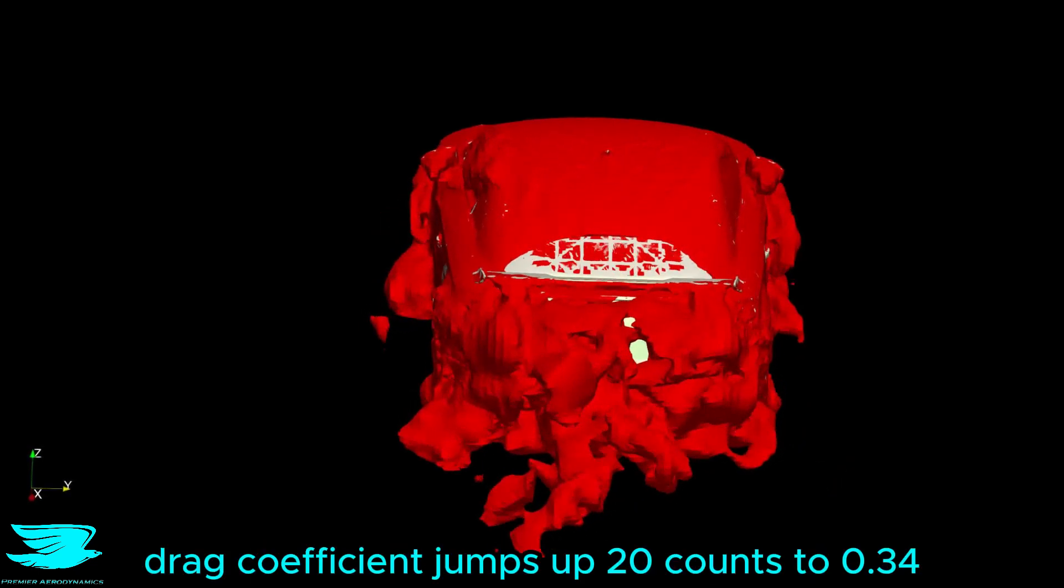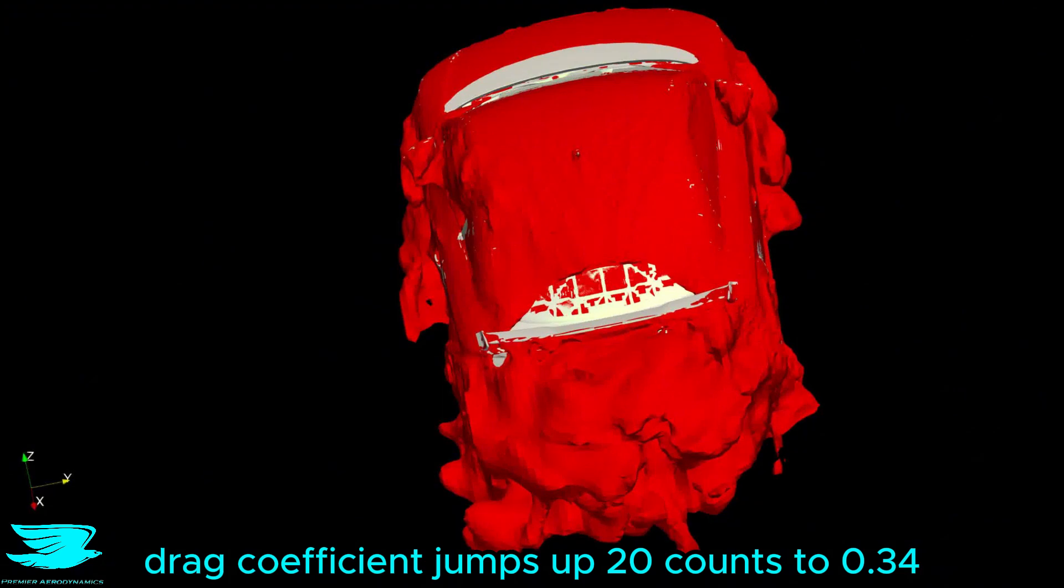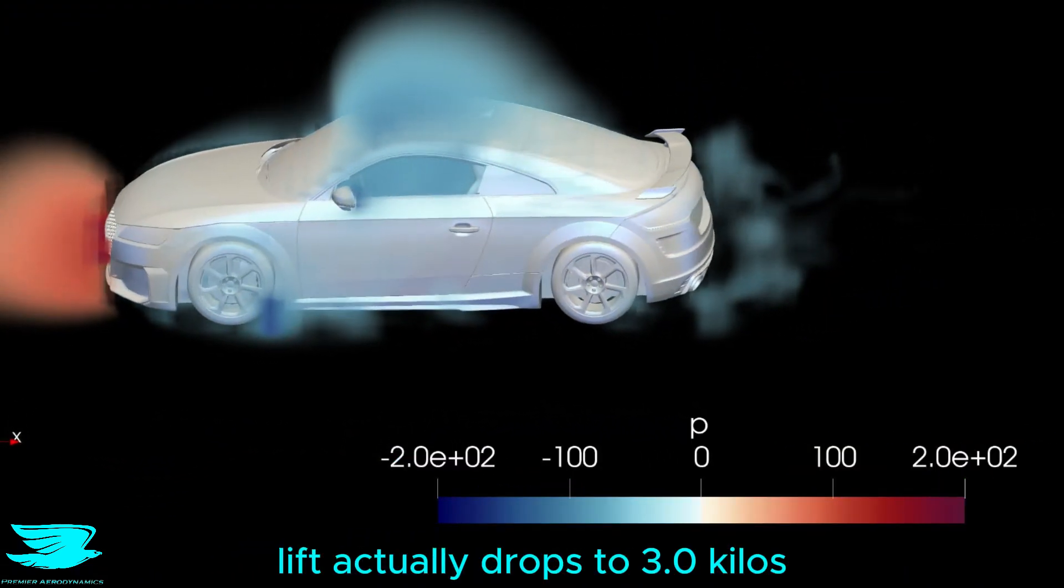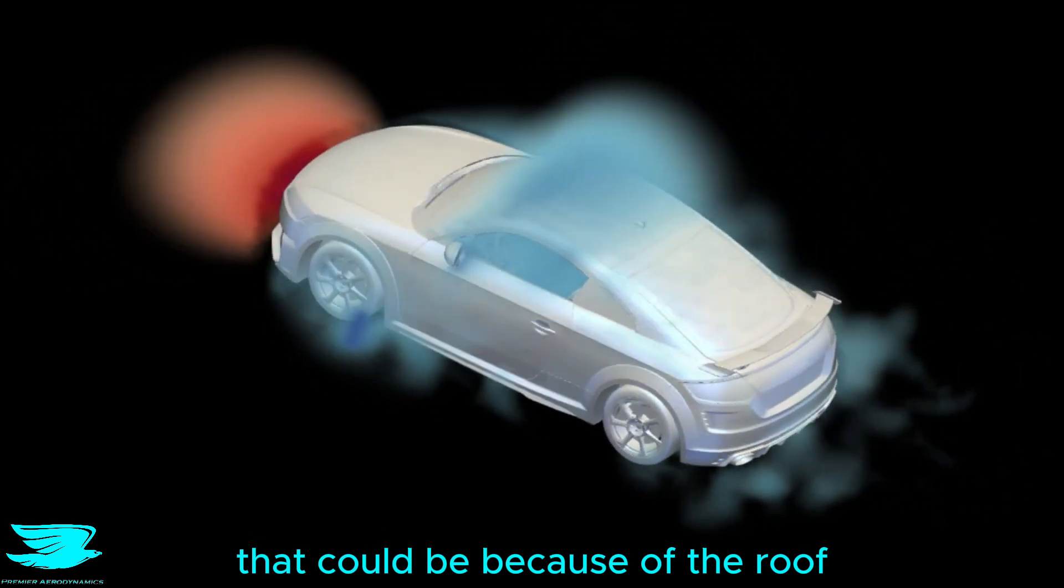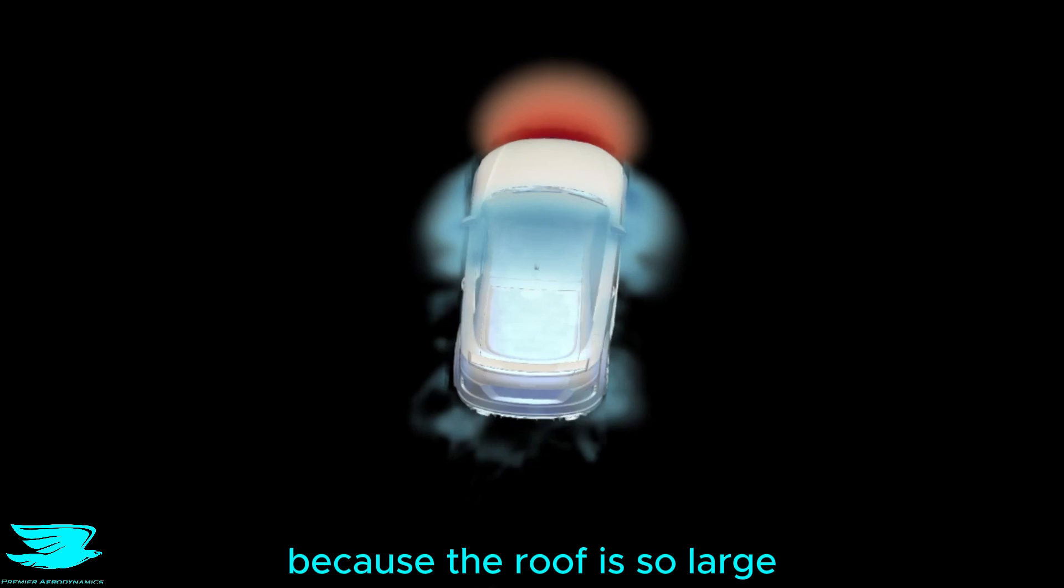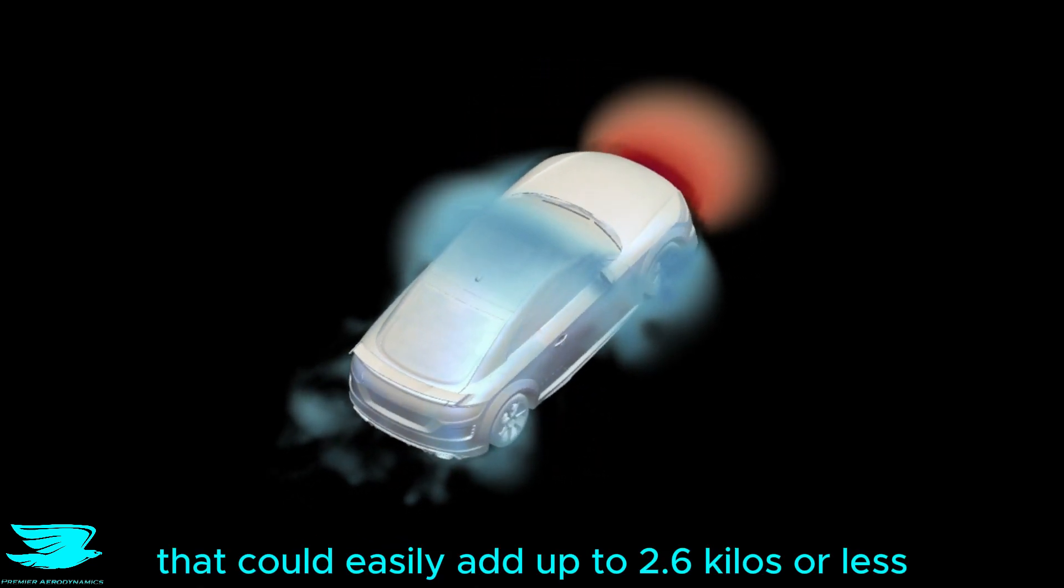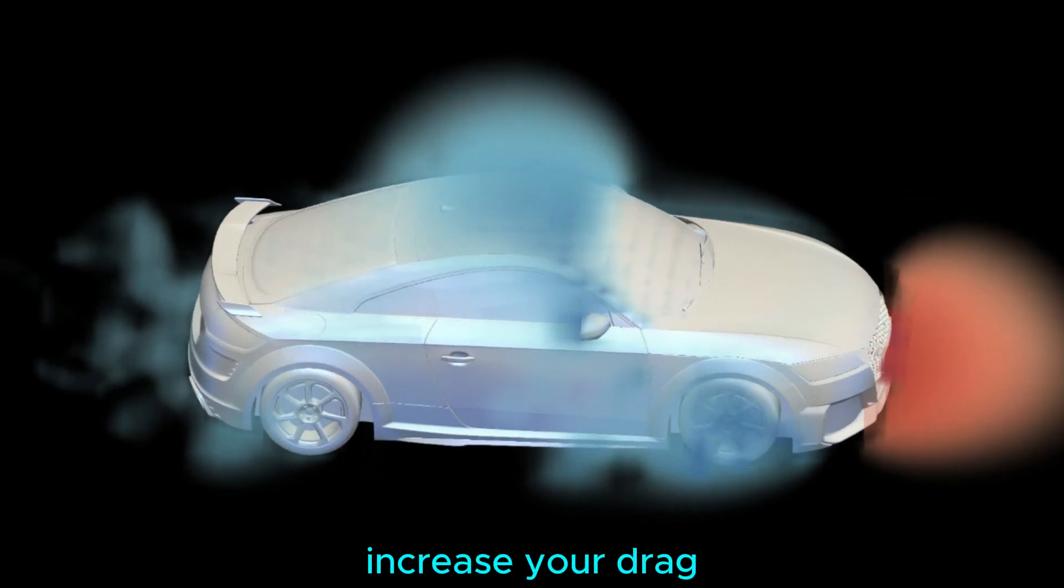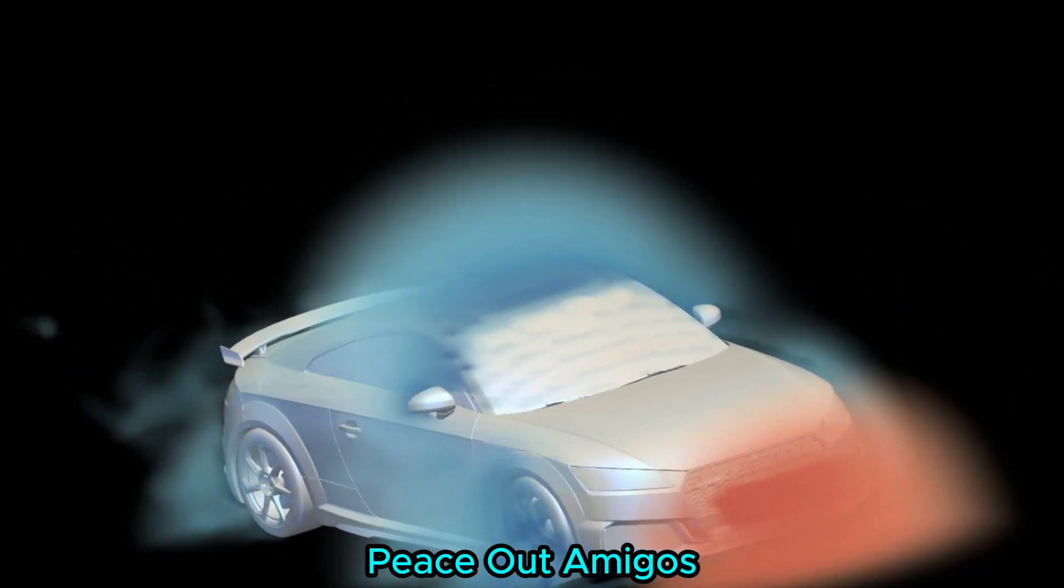With the driver's side window gone, the drag coefficient jumps up 20 counts to 0.34, and interestingly, lift actually drops to 3.0 kilos. That could be because of the roof, because even though there was such a minor change, because the roof is so large, that could easily add up to 2.6 kilos or less. Moral of the story, breaking your TT's window will increase your drag, but it will also reduce your downforce. Peace out, amigos.